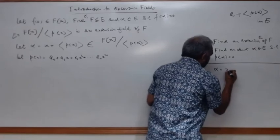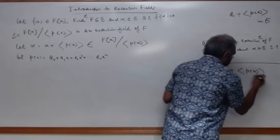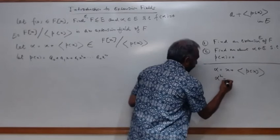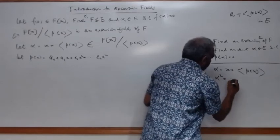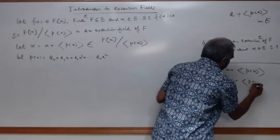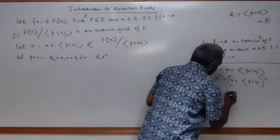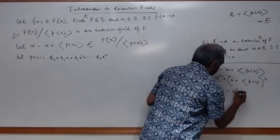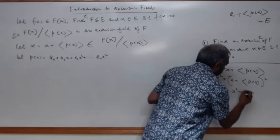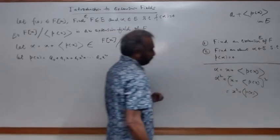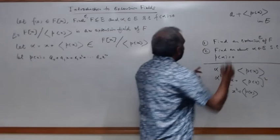If alpha equals x plus ⟨p(x)⟩, then alpha squared equals (x plus ⟨p(x)⟩)² equals x² plus ⟨p(x)⟩. Similarly, higher powers of alpha correspond to higher powers of x plus ⟨p(x)⟩.